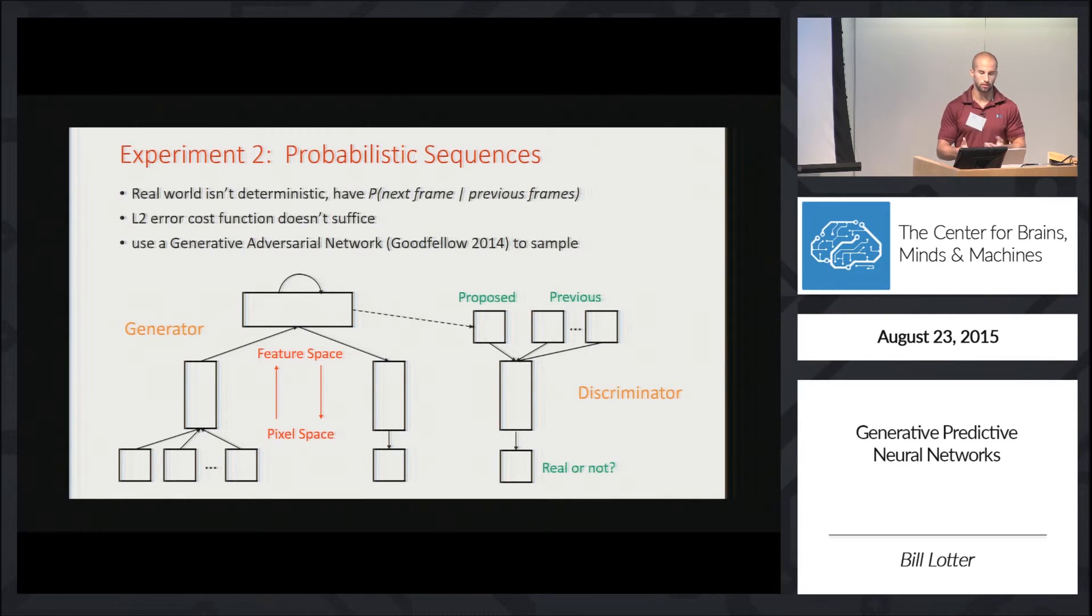But in the real world, everything's not deterministic. In the previous example, if you knew the rotation speed and center, you could exactly solve the system. But in the real world, what we have is a probability distribution of the next frame given the previous frames. And in this case, L2 error simply doesn't suffice.